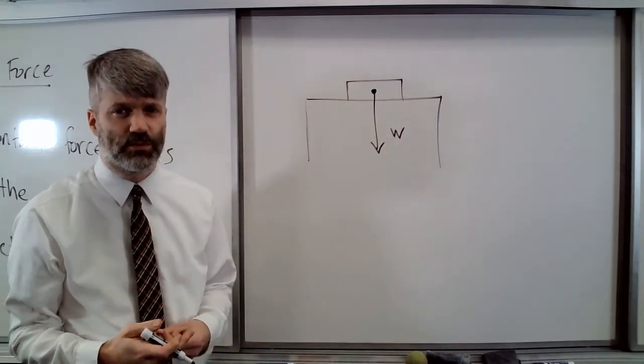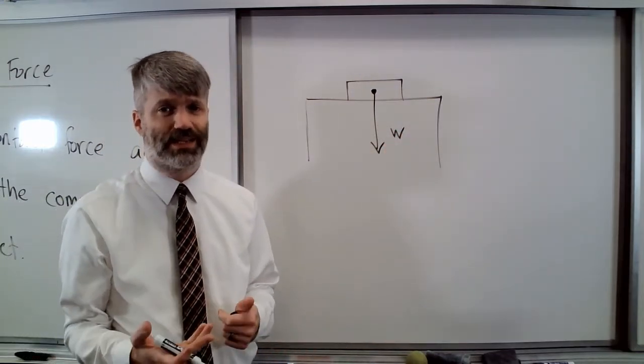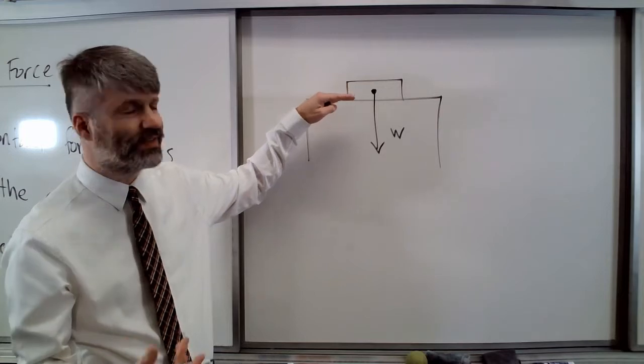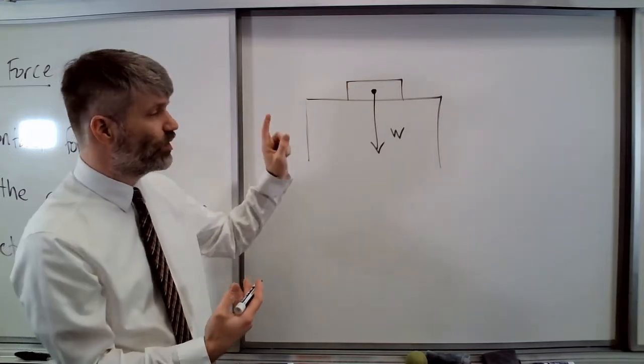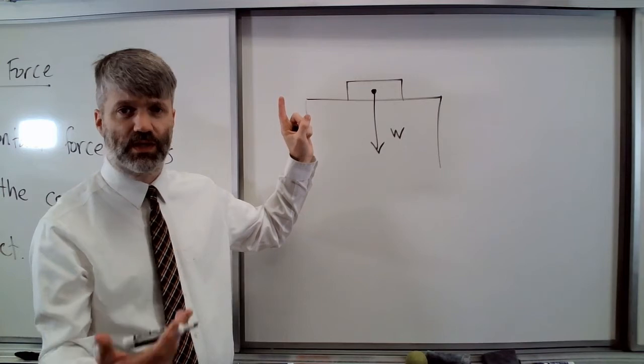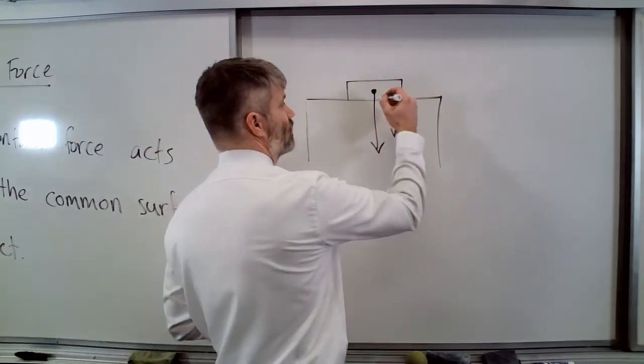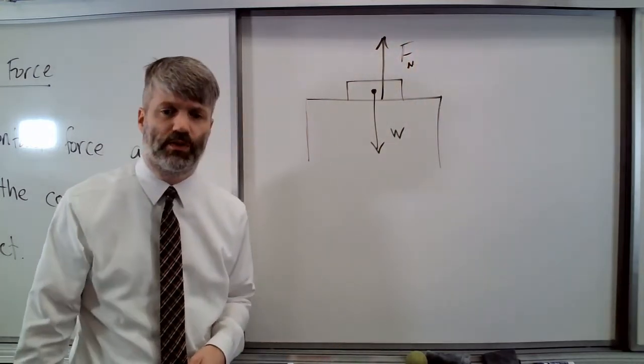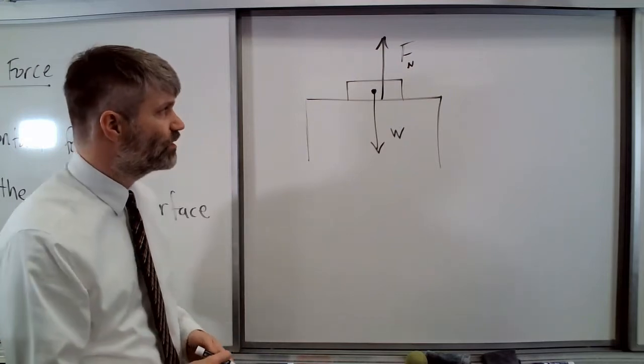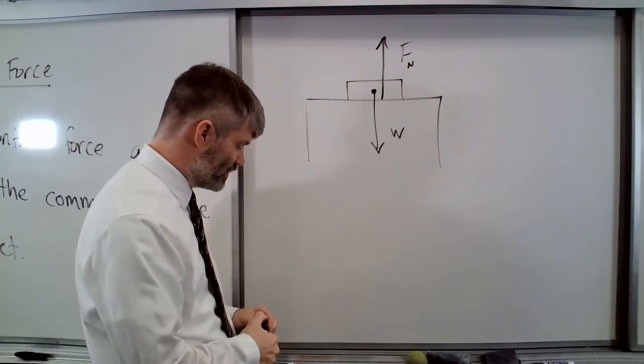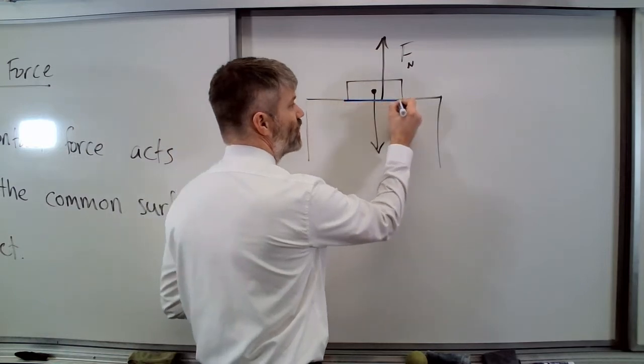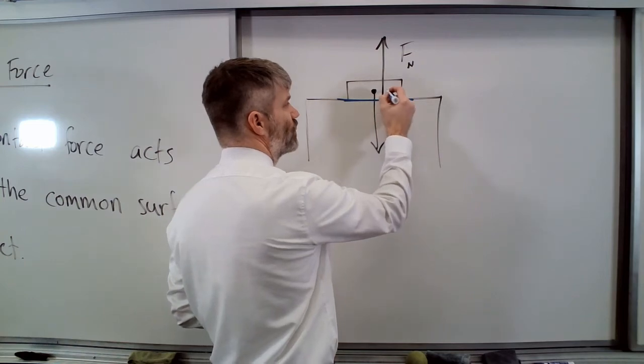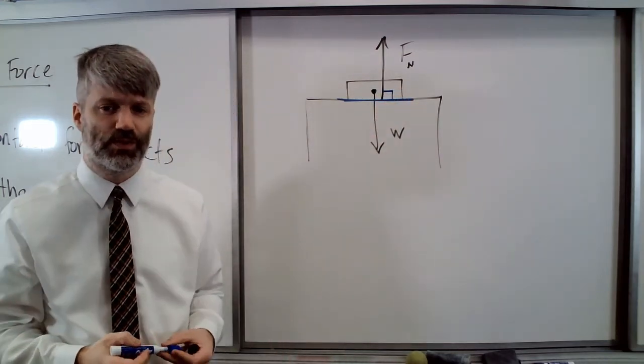We've seen this before - there has to be some force acting against that if the object is not accelerating. Since the book is just resting on the table, it is not accelerating. There has to be some force pointing upwards against the force due to gravity. This can be what we call the normal force. You can see that the surface of contact is this plane right here, where a book meets table. The normal force is perpendicular to that surface.